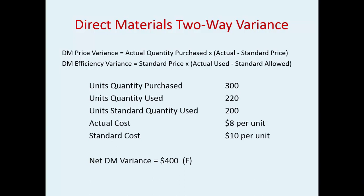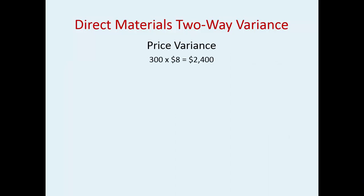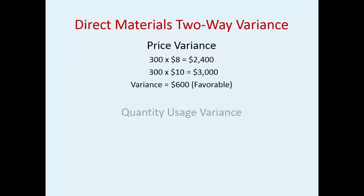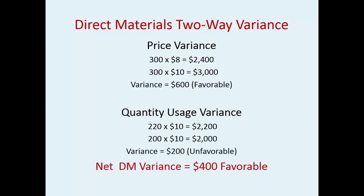The net direct materials variance was a favorable $400. Now you want to look at why. You have a total favorable, but how much you used compared to the standard quantity expected is actually unfavorable. The actual cost was only $8 and the standard cost is $10, so you have a favorable price variance. This is a two-way — two different things went into the total. You have a favorable price variance but an unfavorable usage variance of $200, and the net total is $400 favorable.